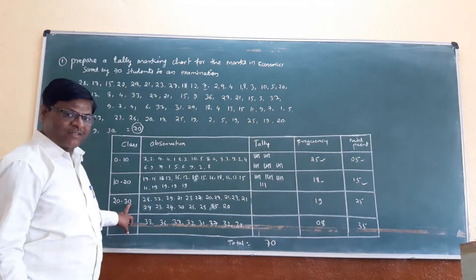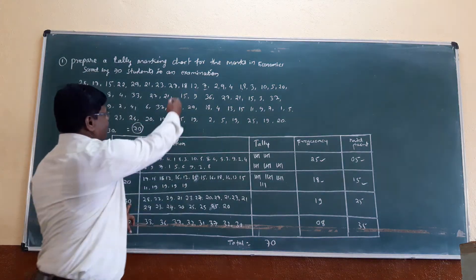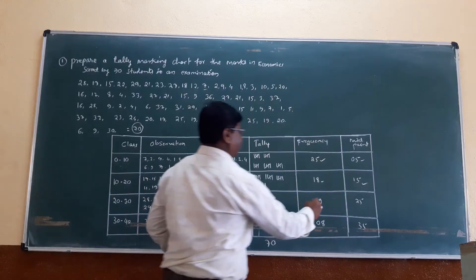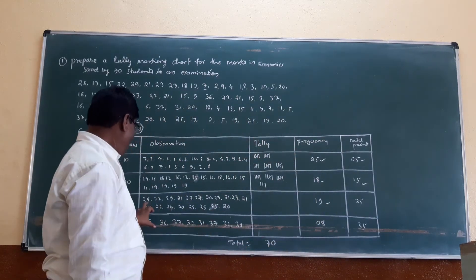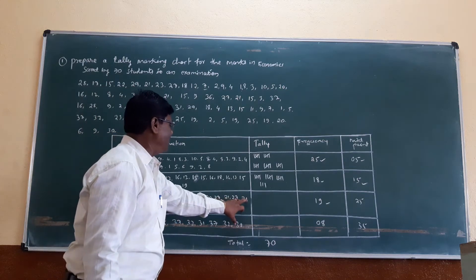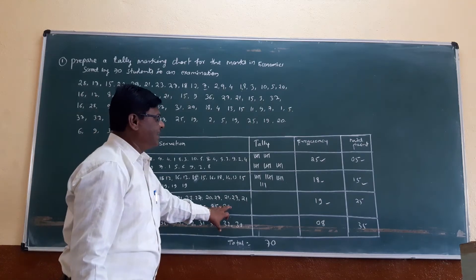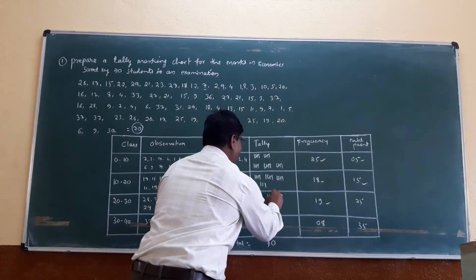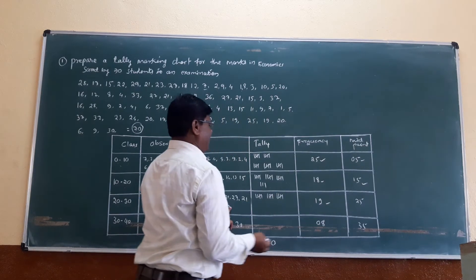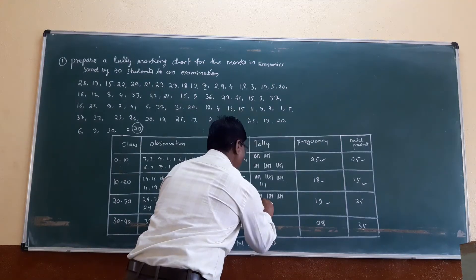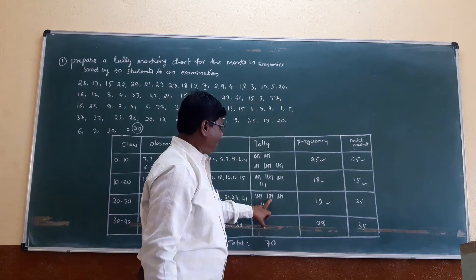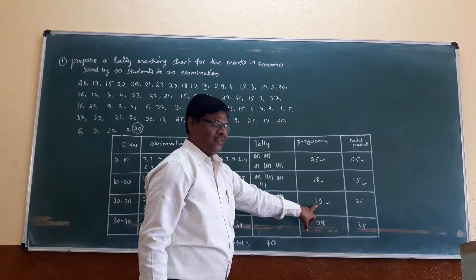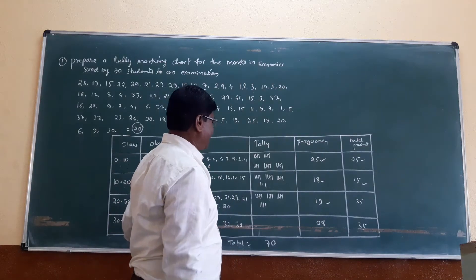The class 20 to 30 has numbers from 20 to 30. Its frequency is 19. Tally: 5, 10, 15, then 4 more — 15 plus 4 equals 19. The frequency for class 20 to 30 is 19.